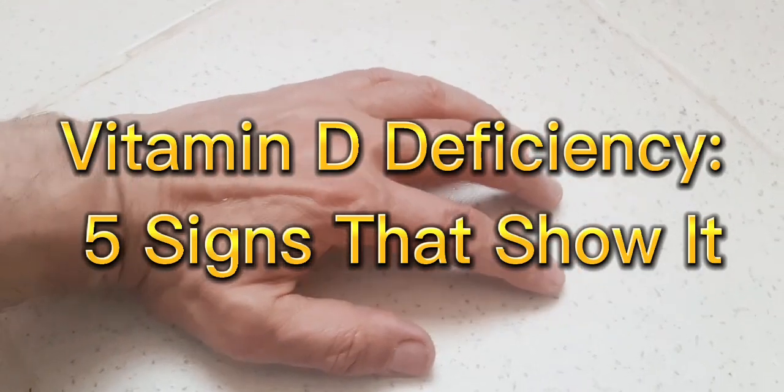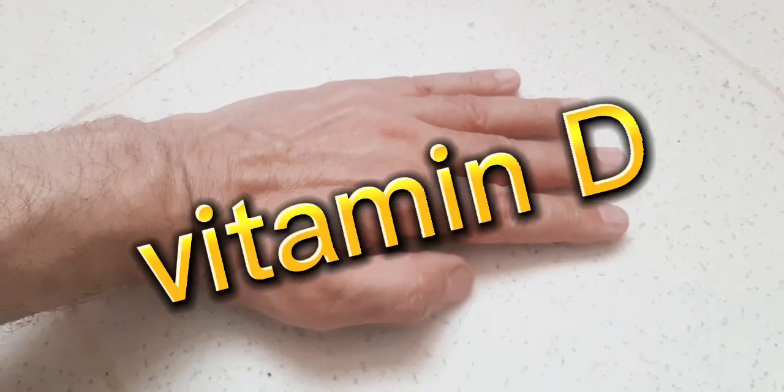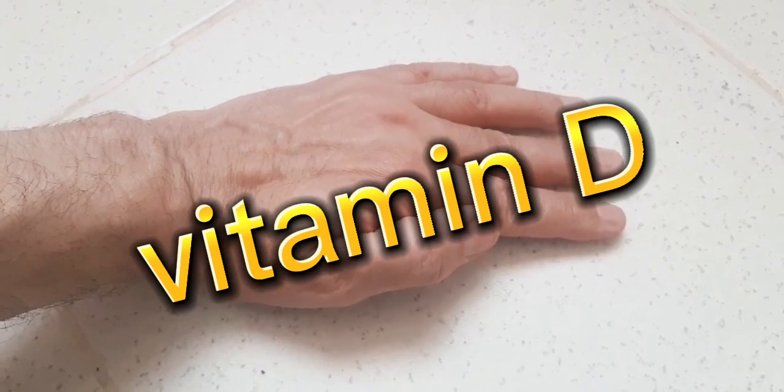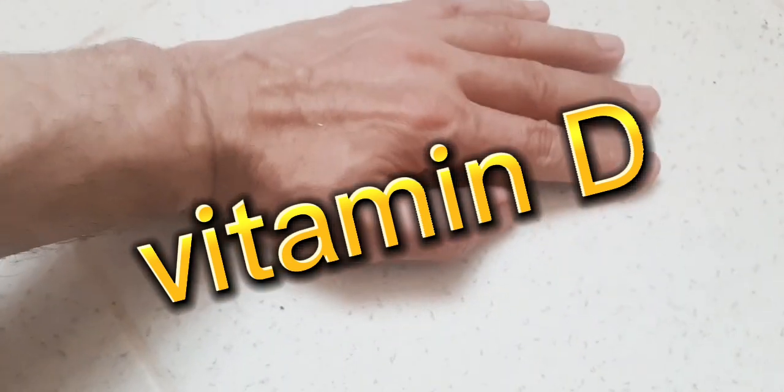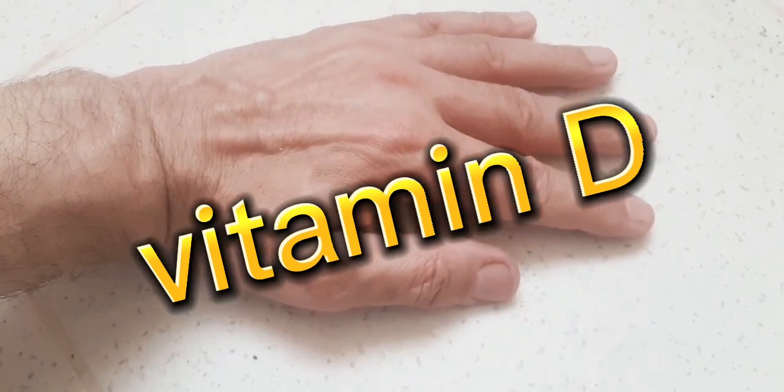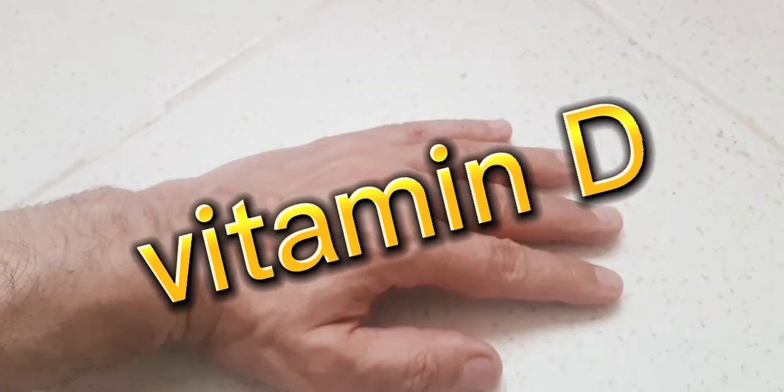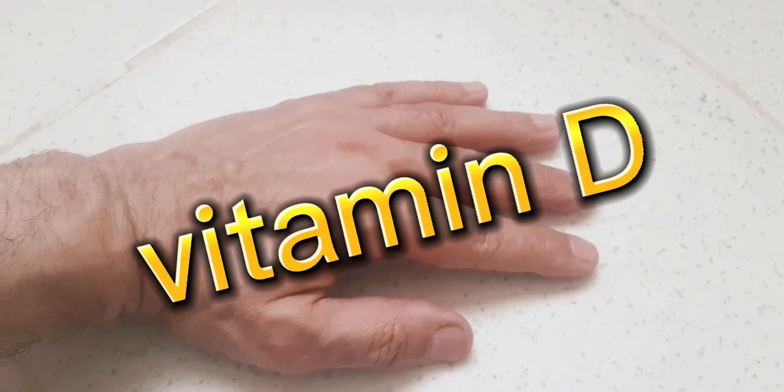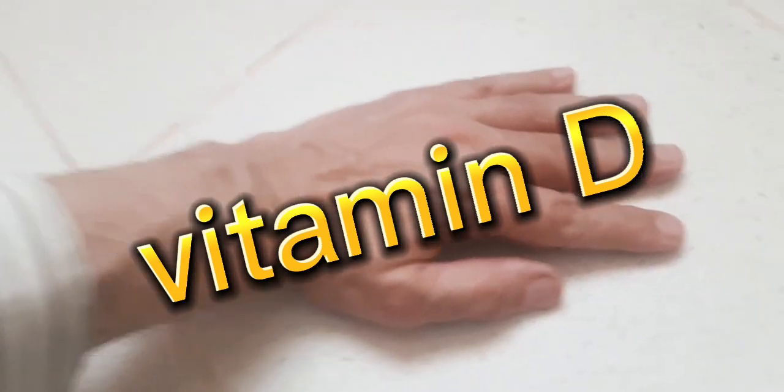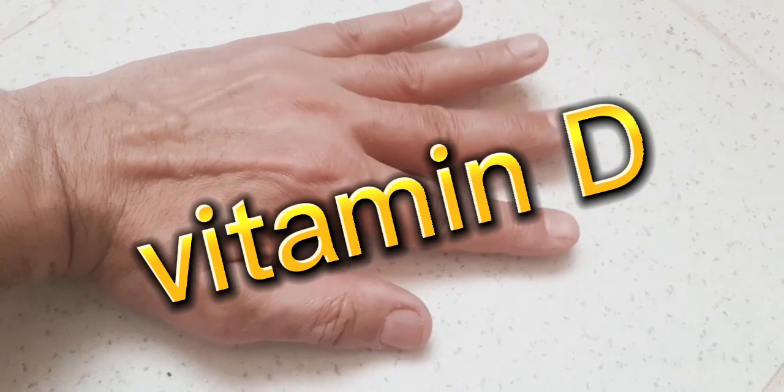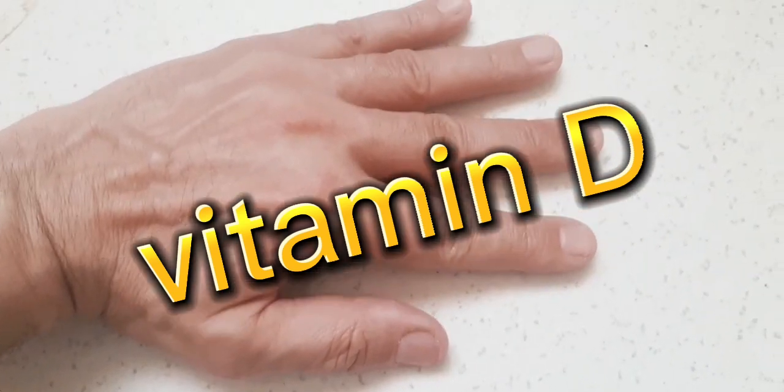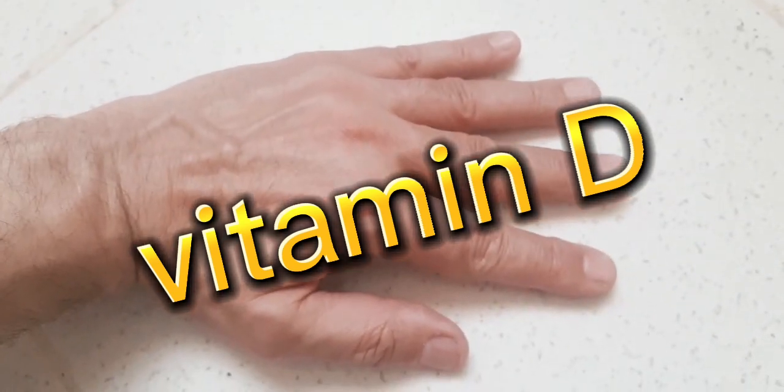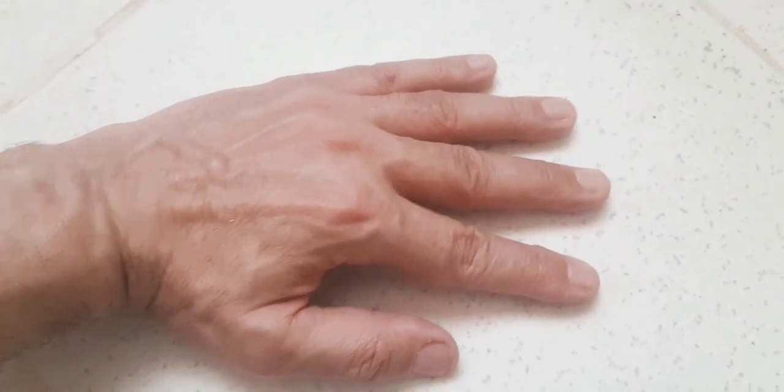Vitamin D deficiency: five signs that show it. Vitamin D that comes from the sun and other sources is really important for our health. On the contrary, the lack of this vitamin leads to several diseases with various symptoms such as fatigue, dizziness, and others, which requires medical intervention or sun vitamin recovery. To find out if you really have a sunshine vitamin deficiency, we show you the signs that show it.